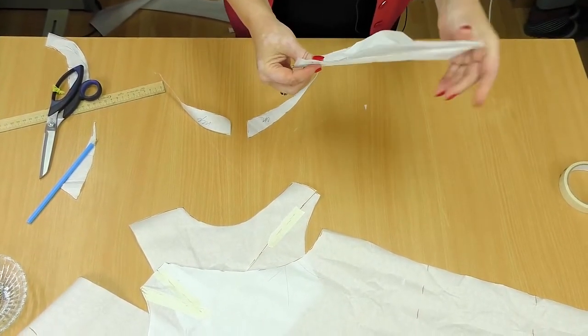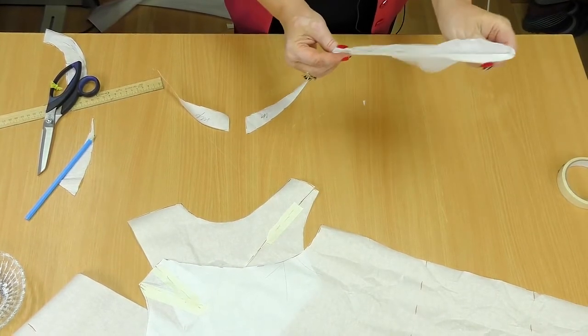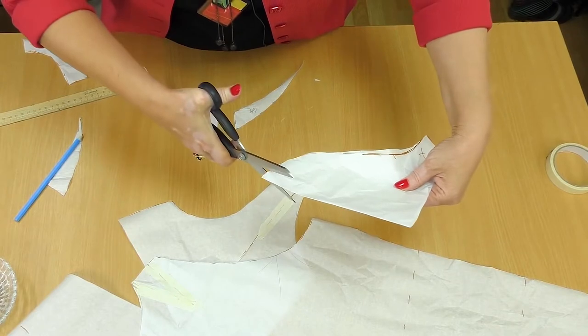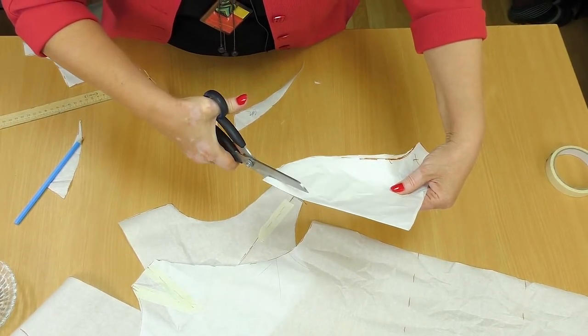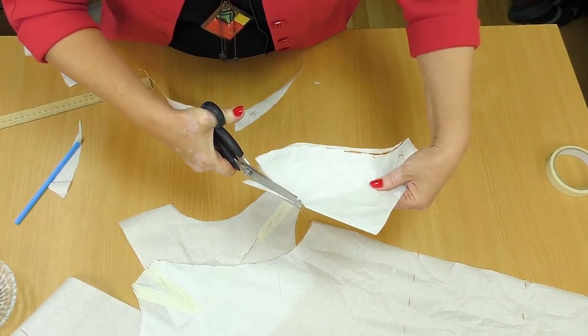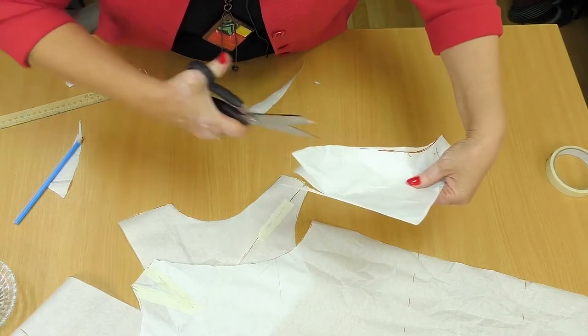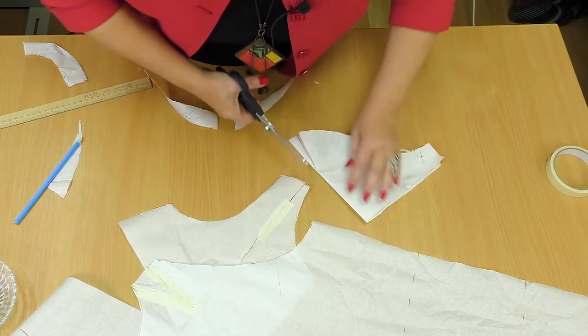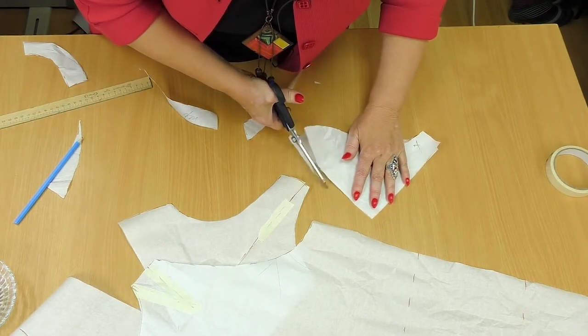Remember that we need to fold the sleeve in half on the center line. Take one or two centimeters off here, just like for the raglan sleeve. Don't make the cut straight. This line can be straight. Make it smooth. And take the extra piece off the shoulder.